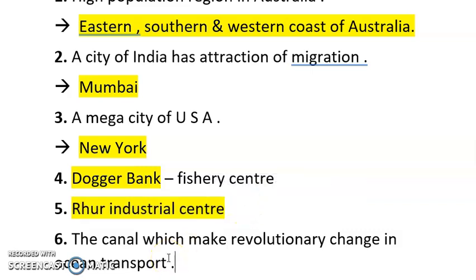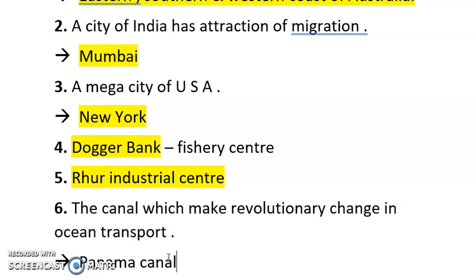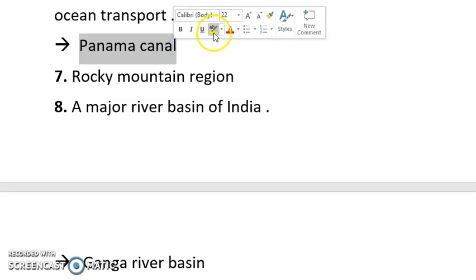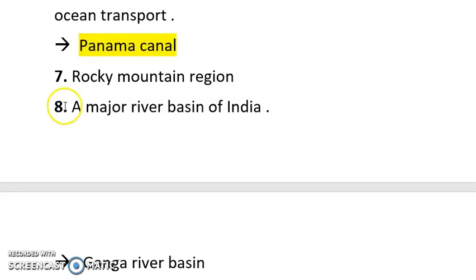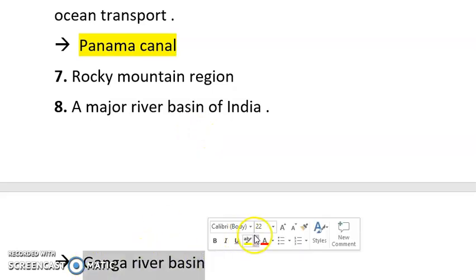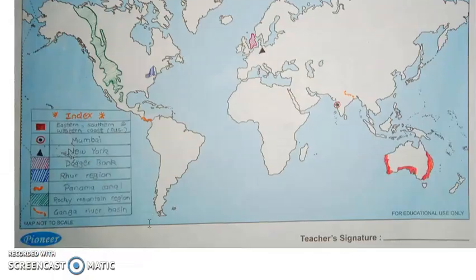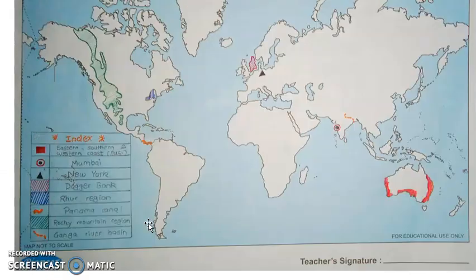Next, the canal which makes a revolutionary change — again the same question, and the answer is Panama Canal. Next is Rocky Mountain region and a major river basin in India. The most major river basin in India is the Ganga River Basin.